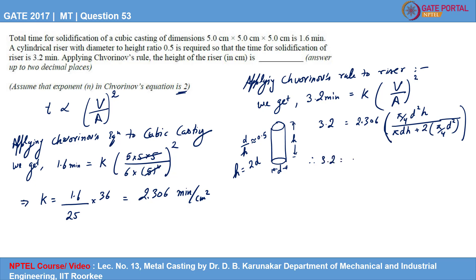Therefore, 3.2 is nothing but 2.306 pi by 4, diameter is H by 2, so H square by 4 into H, divided by pi H square by 2. I am replacing diameter with H by 2, plus 2 times pi by 4. Now diameter is H by 2, so it will be H square by 4. 3.2 is 2.306 times. If you further simplify this equation.